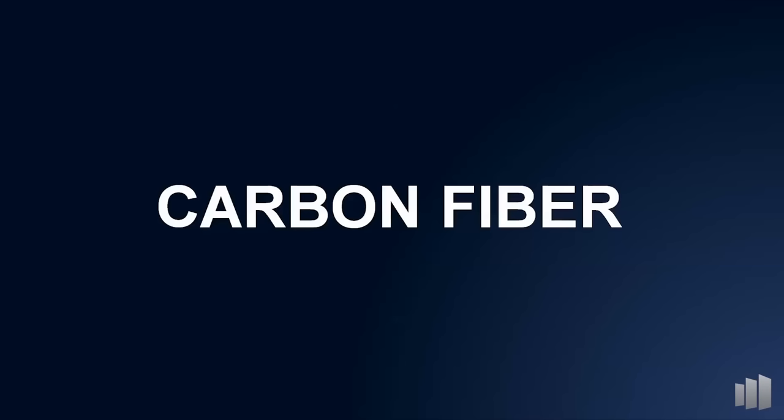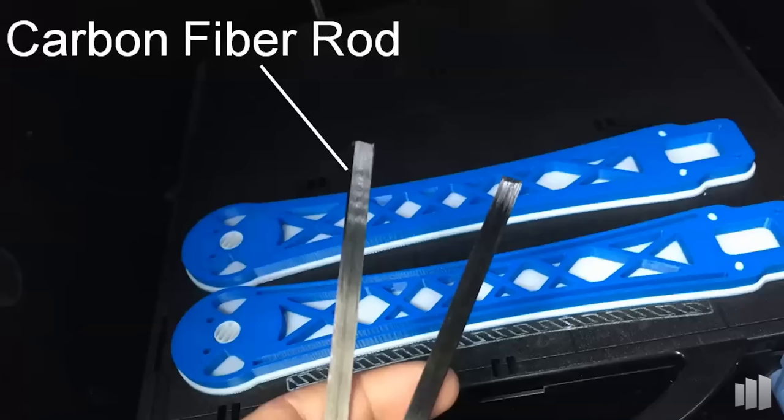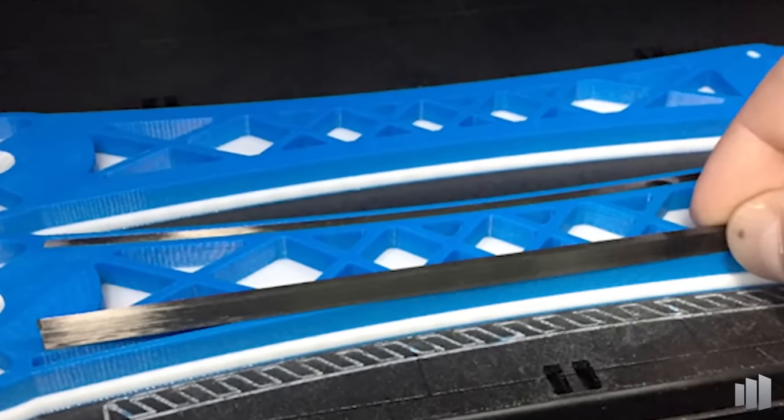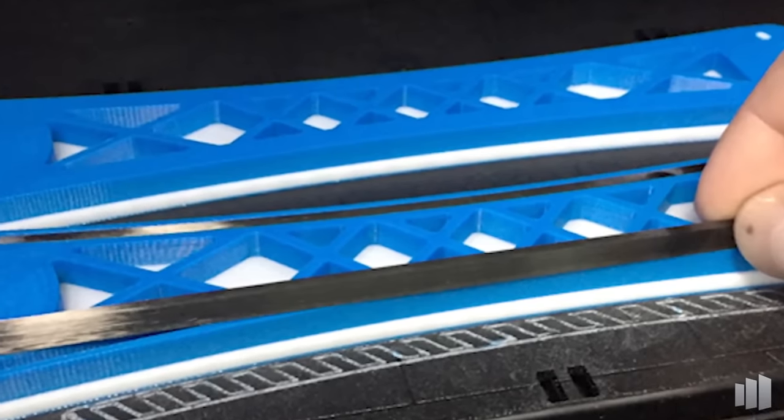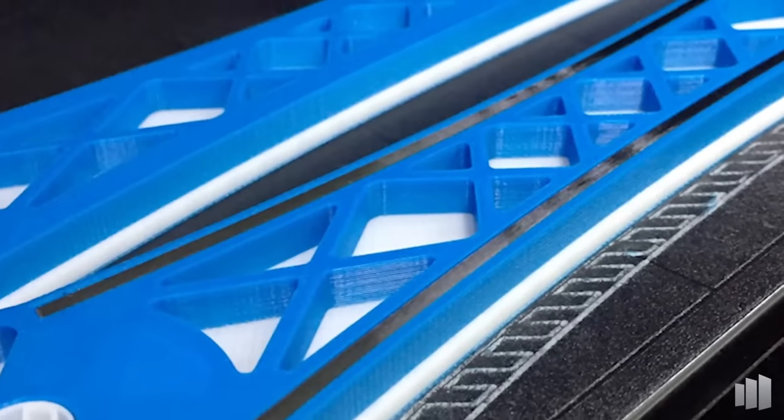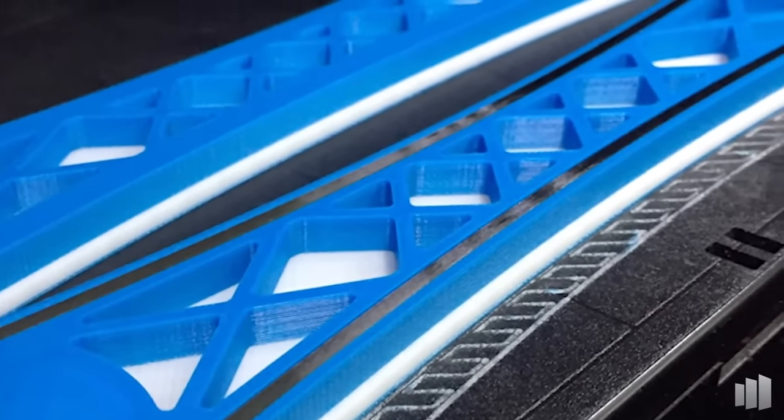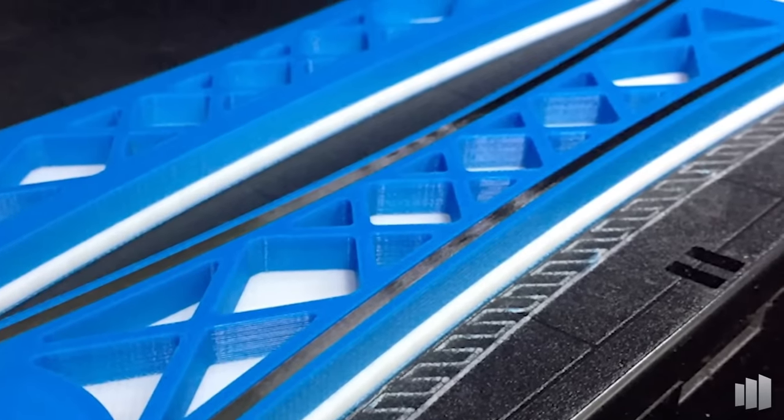One of our favorite parts is this quadcopter arm. We found that we needed to increase strength and reduce deflection on this part. We accomplished this by cutting some pieces of carbon fiber rod to length, inserting them into the channels of this part, and embedding them in 3D printed plastic. The resulting part is incredibly strong, thanks in large part to the carbon fiber rods inside.